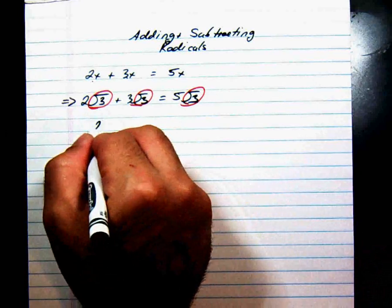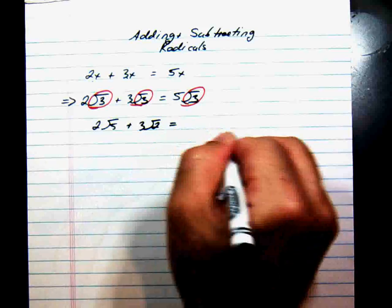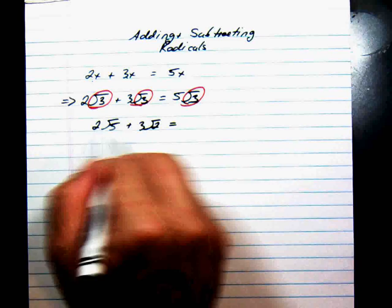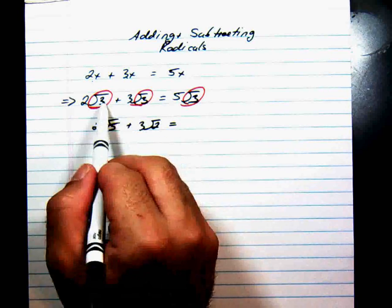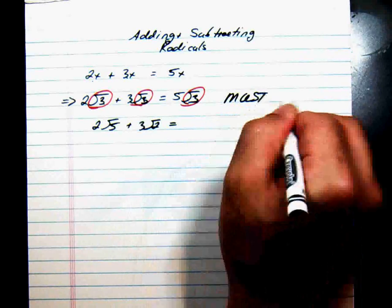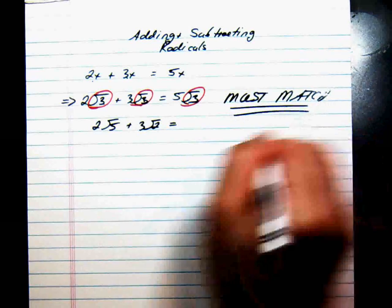for instance, if I were to say to you 2 square roots of 5 plus 3 square roots of 2, that does not combine or simplify. These are not the same. You can't add or subtract them. These have to match. This match must match.